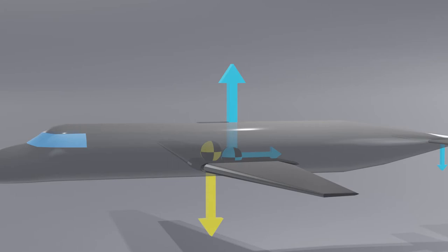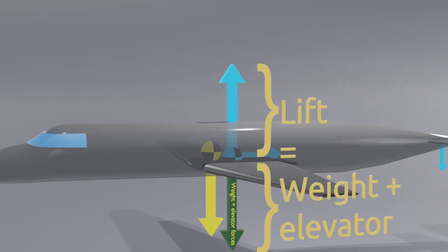Now that the total downward forces from the weight and elevator is equal to the upward lift force, we can maintain level flight.